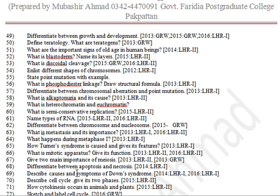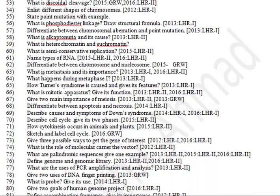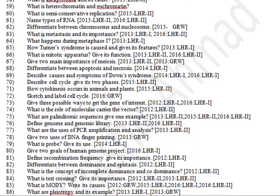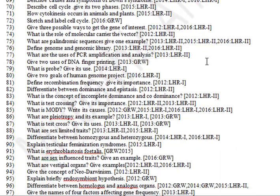Differentiate between apoptosis and necrosis. Describe the causes and symptoms of Down syndrome. Describe the cell cycle and give its two phases. How does cytokinesis occur in animals and plants? Sketch and label the cell cycle.